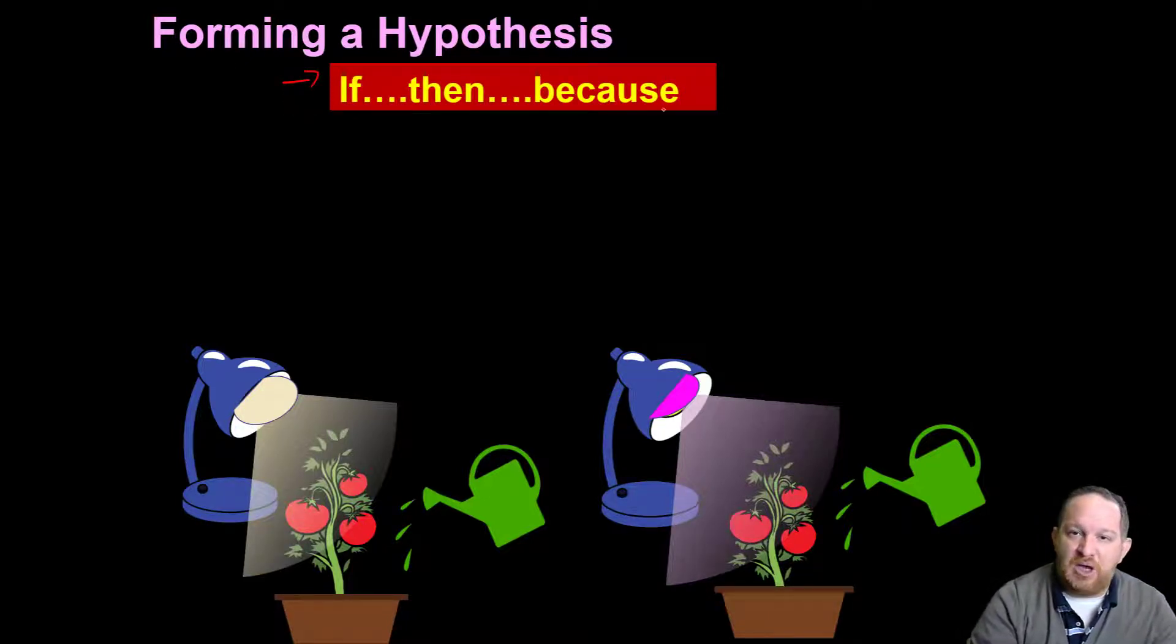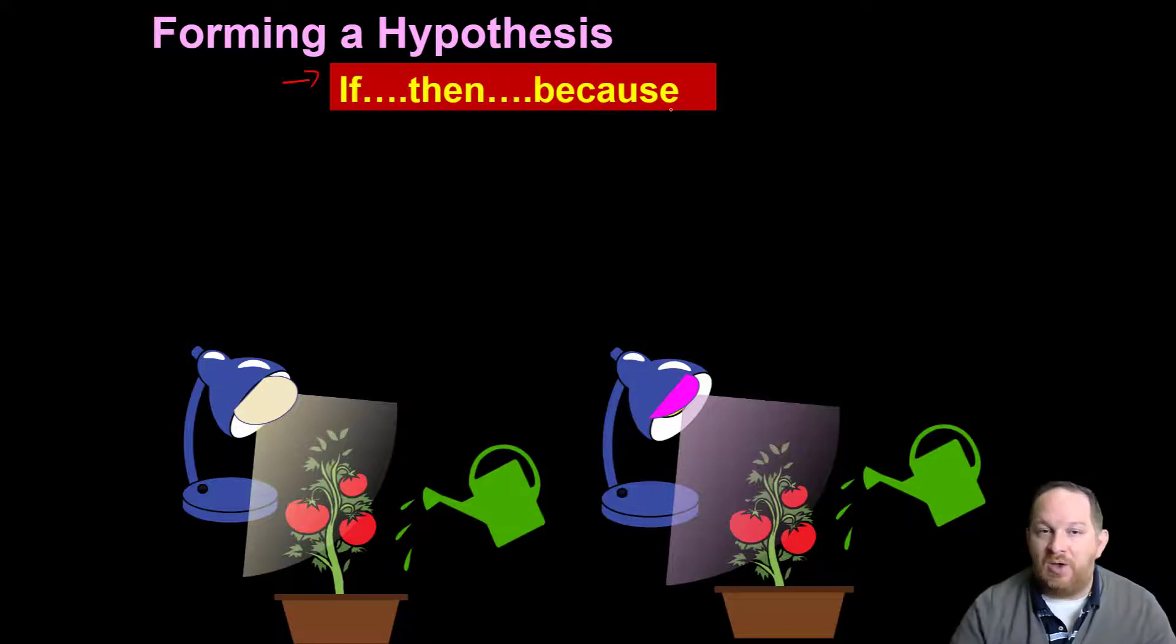An easy frame is to set up this basic outline: if, then, because. Now scientists working in the field will not always have this exact model. But if you're trying to learn how to do this, I think this is a good model to start. So we say, if, then, because. Let me give you an example.